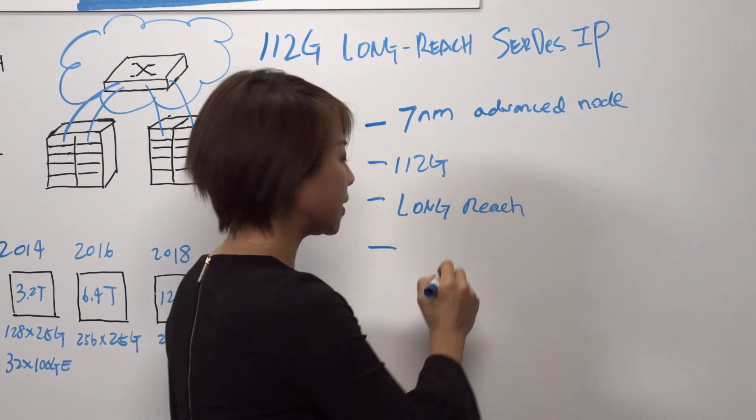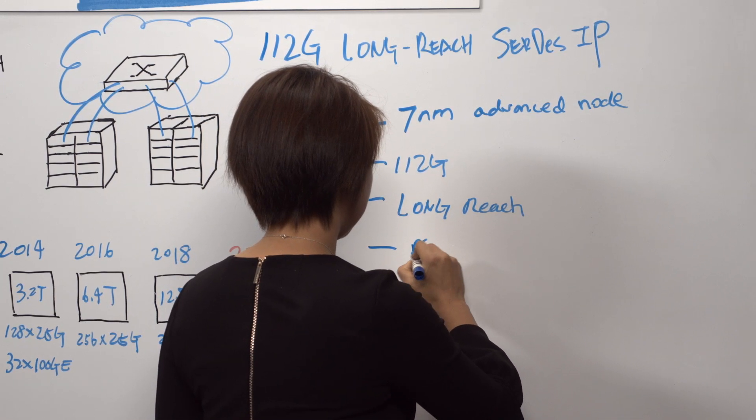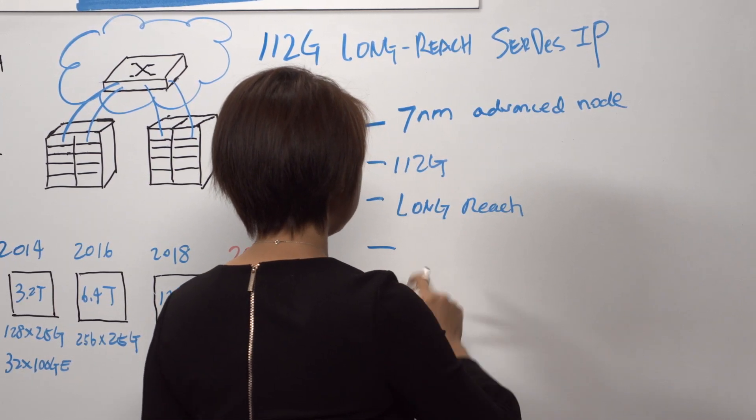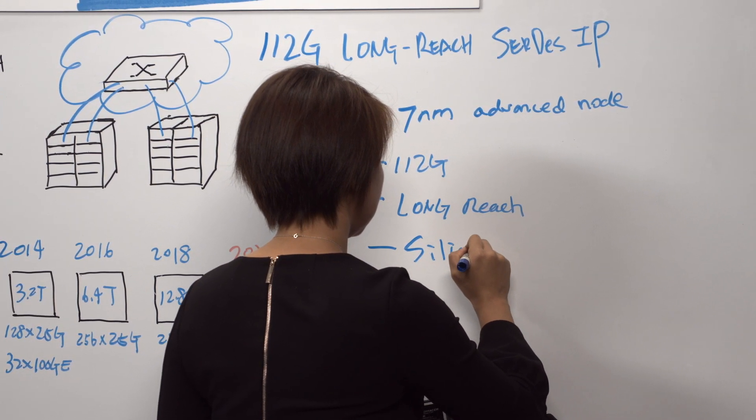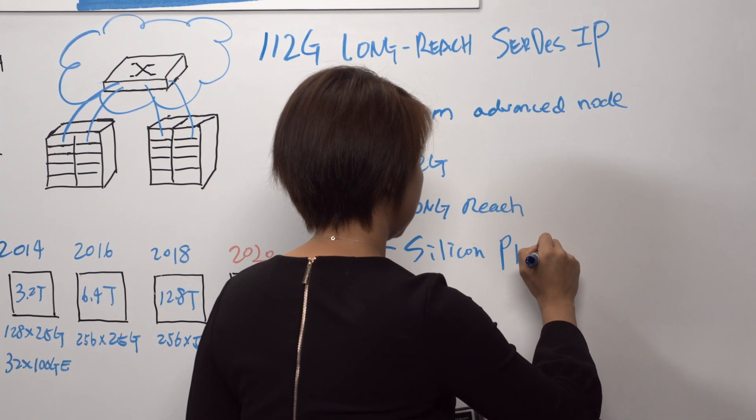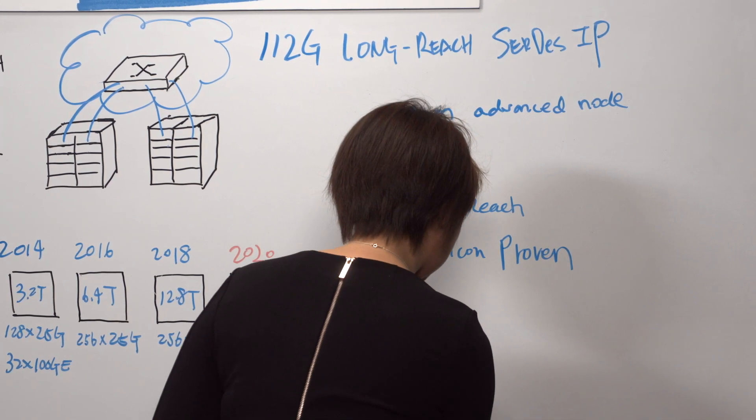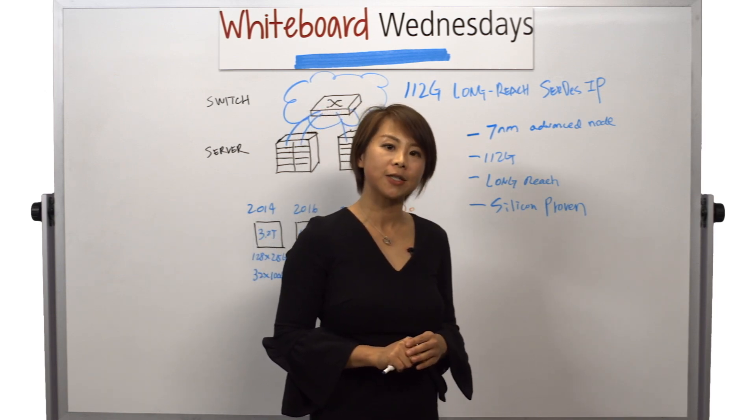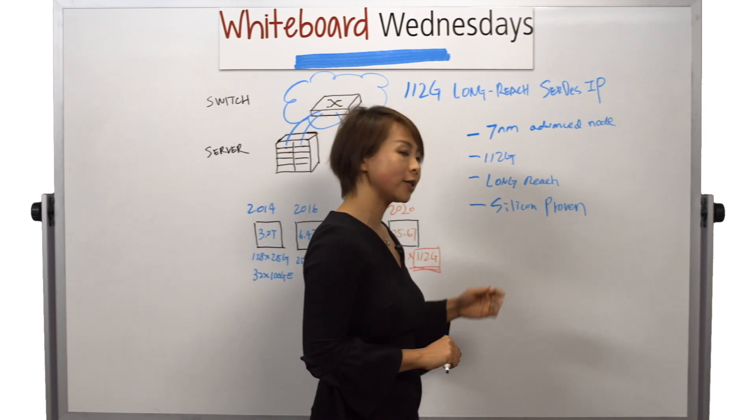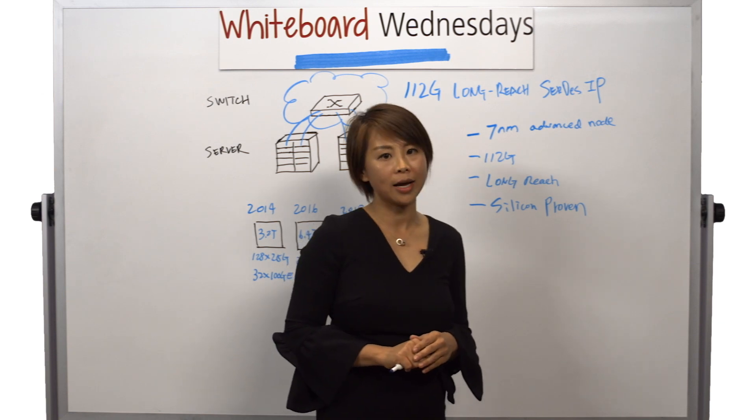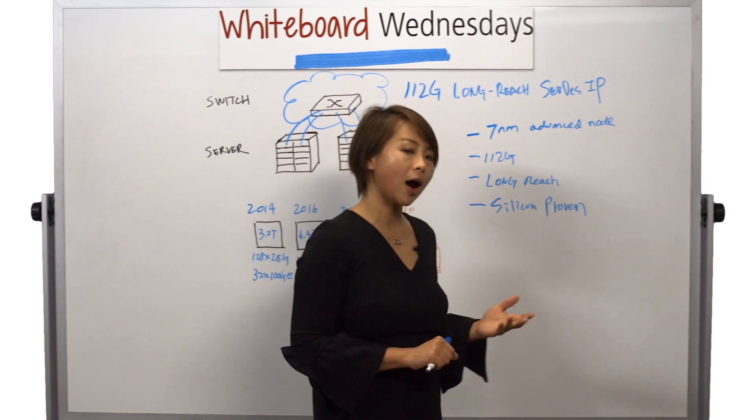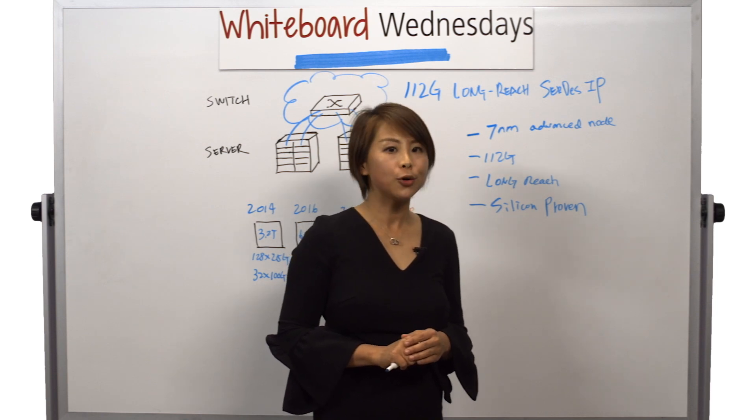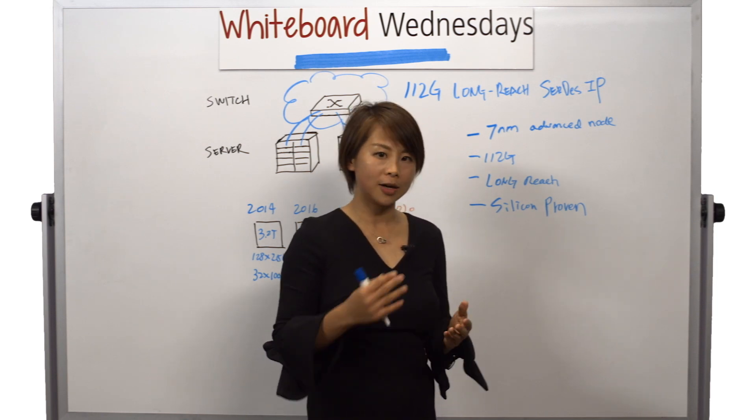Last but not least, our SerDes is silicon-proven. For customers, this means lower risk and faster time to market. We have our test chip back in the lab, operating at 112G. And we are ready to engage with all new customers who are interested in using this new IP for their next design.